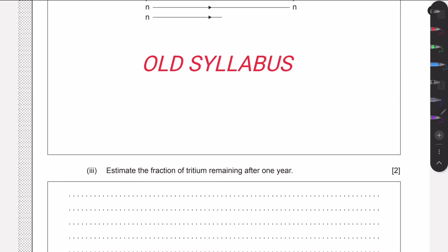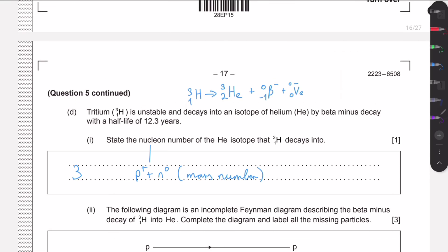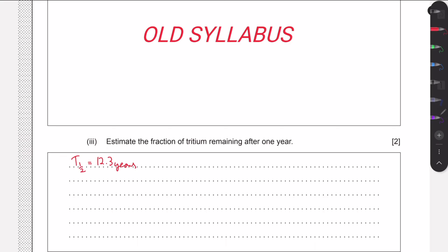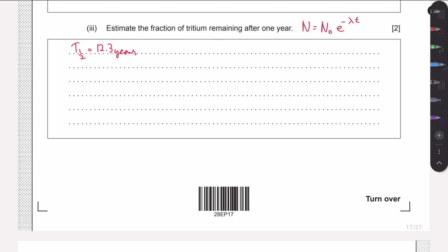The Feynman diagram is also from the old syllabus, so we don't need that anymore. We now need to estimate the fraction of tritium remaining after one year. The half-life is 12.3 years. We use N equals N₀ times e to the minus lambda times t, but we need to find lambda, the decay constant. The half-life is defined as the time for the number of nuclei to halve, so substituting N₀/2 gives one half equals e to the minus lambda times t-half.